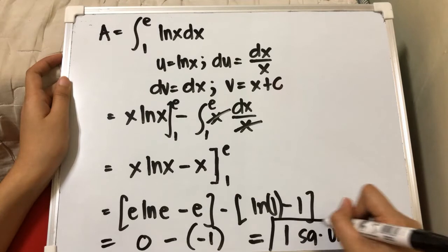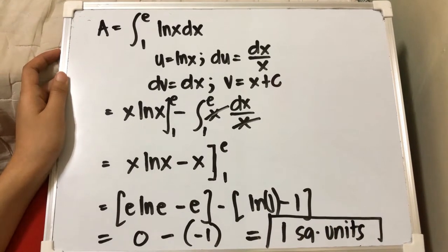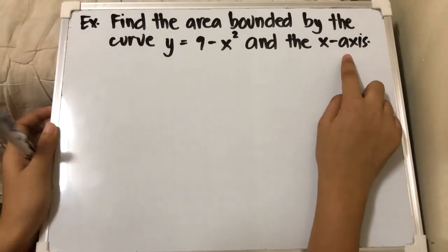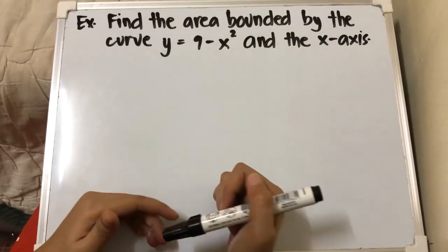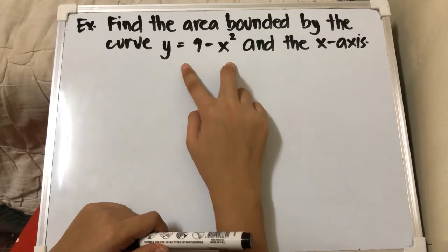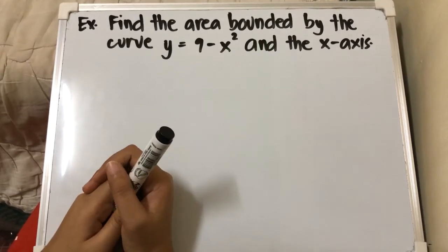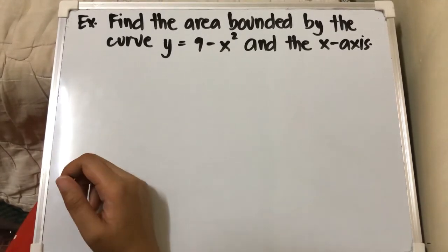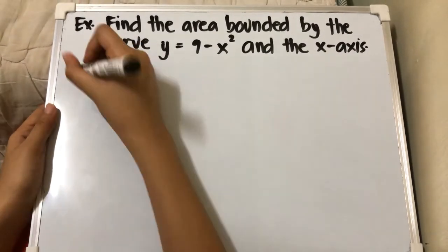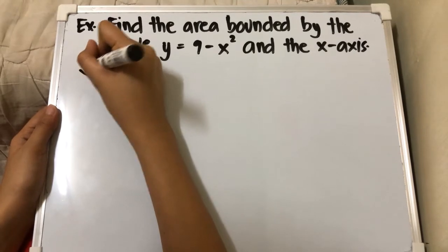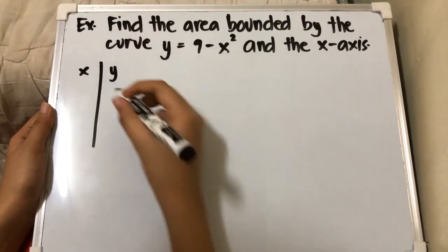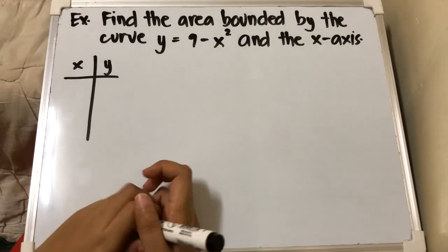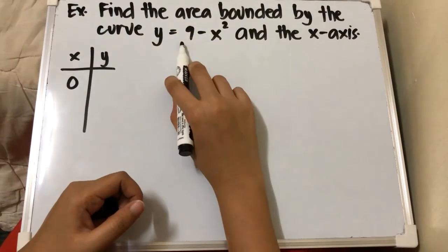Here's another example: find the area bounded by the curve y equals 9 minus x² and the x-axis. Our boundaries here are only two. The first thing to do again is to sketch the graph. Using our function, we find values for x and y. If x equals 0, we get 9 minus 0 squared, which is 9.